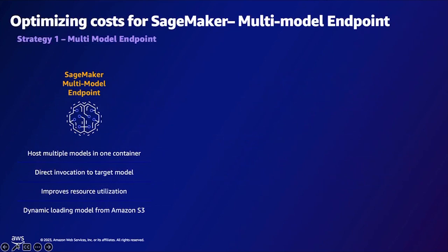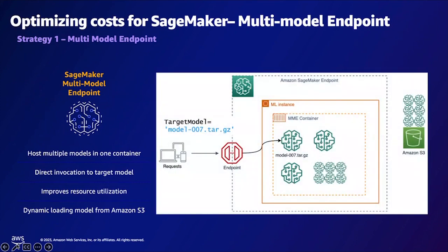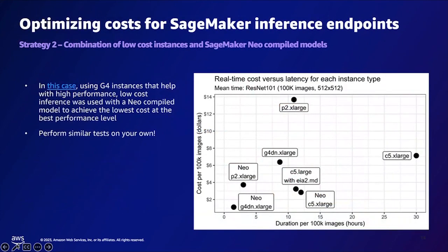Let's look at some strategies and best practices for optimizing costs on SageMaker. With SageMaker multi-model endpoints, you can deploy thousands of models behind a single endpoint, improving cost effectiveness while providing flexibility to use models as needed. It works best when you have models of similar size and latencies belonging to the same ML framework. You can dynamically load the respective models onto the SageMaker endpoint to serve your requests.